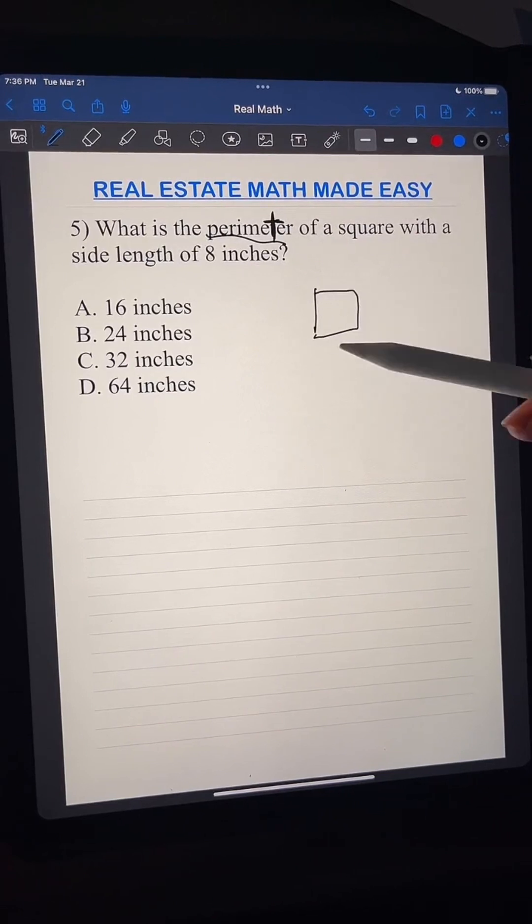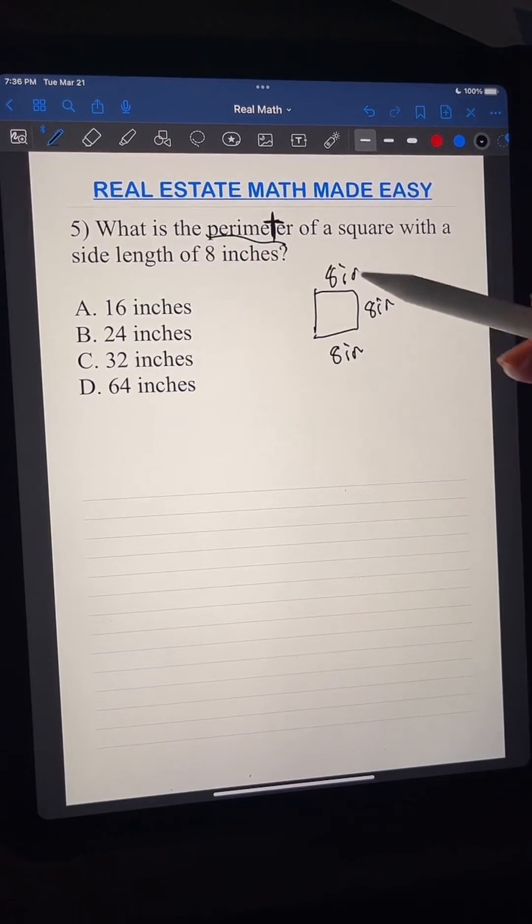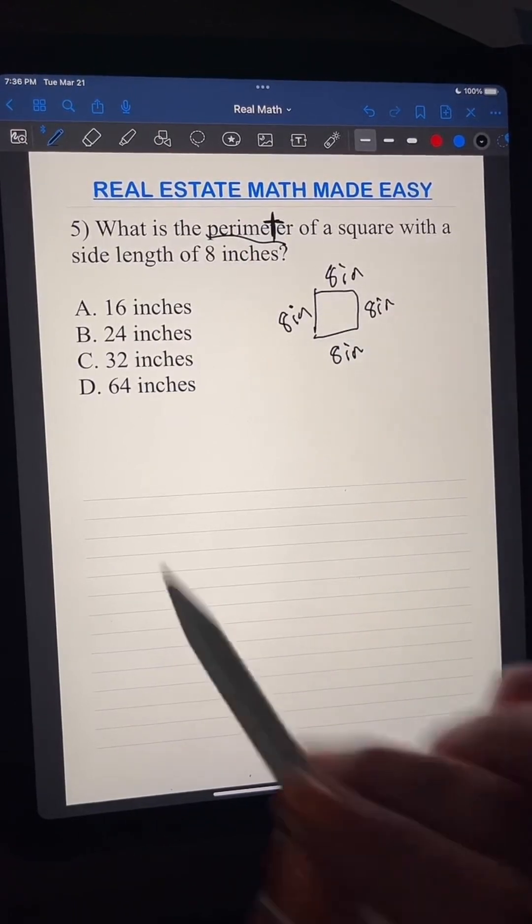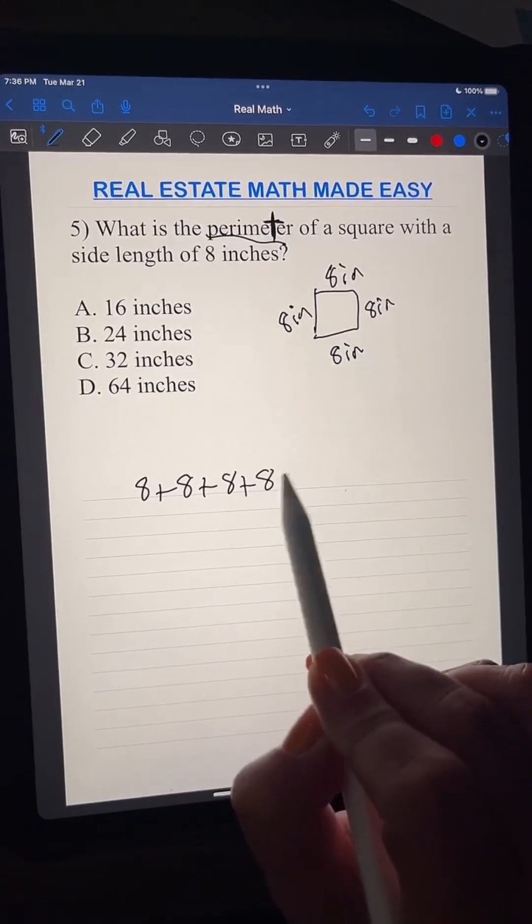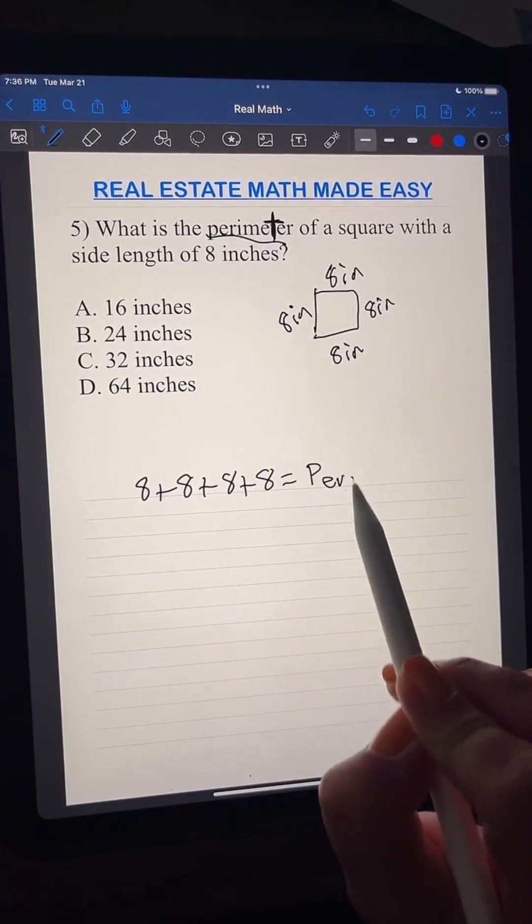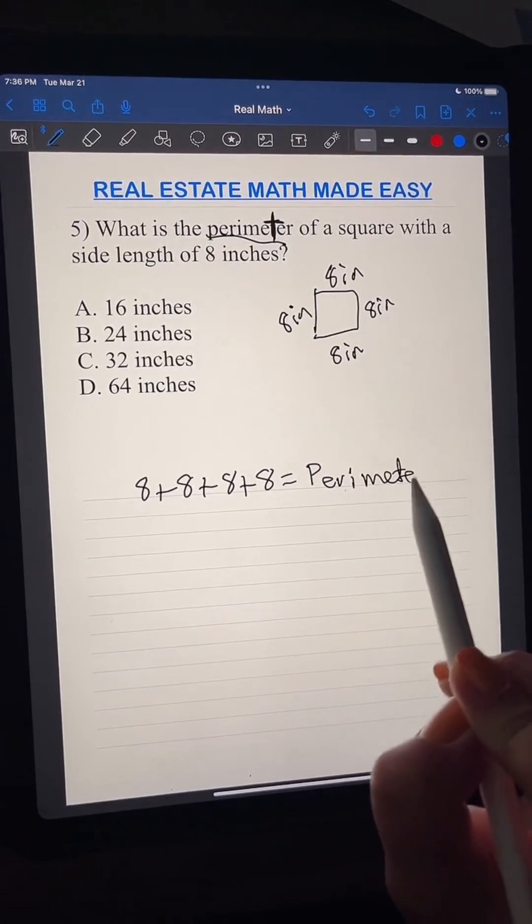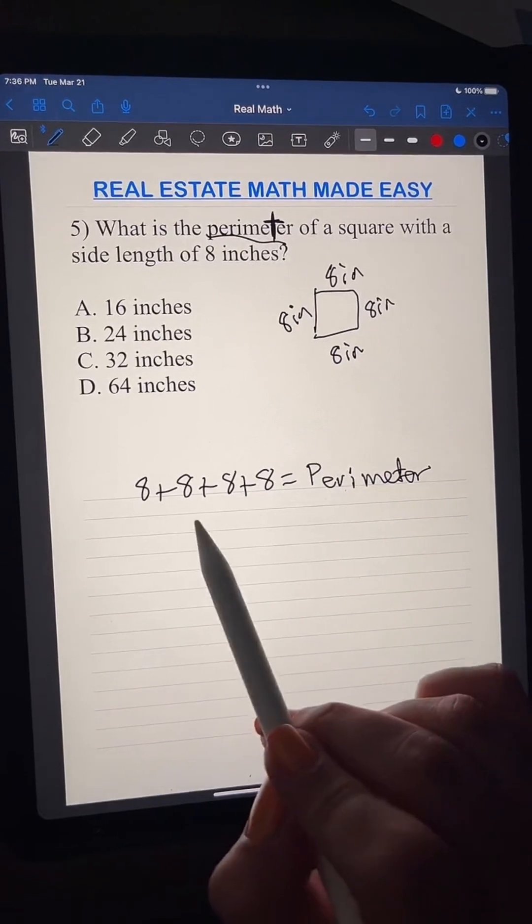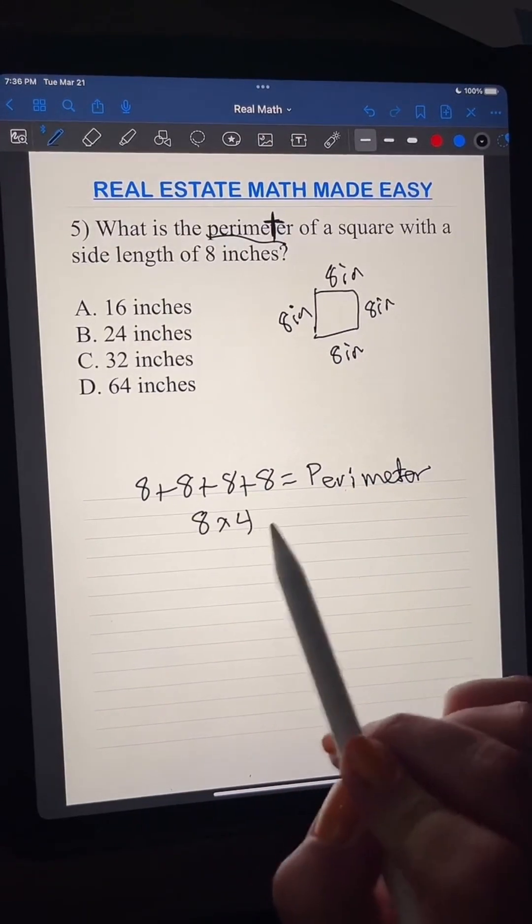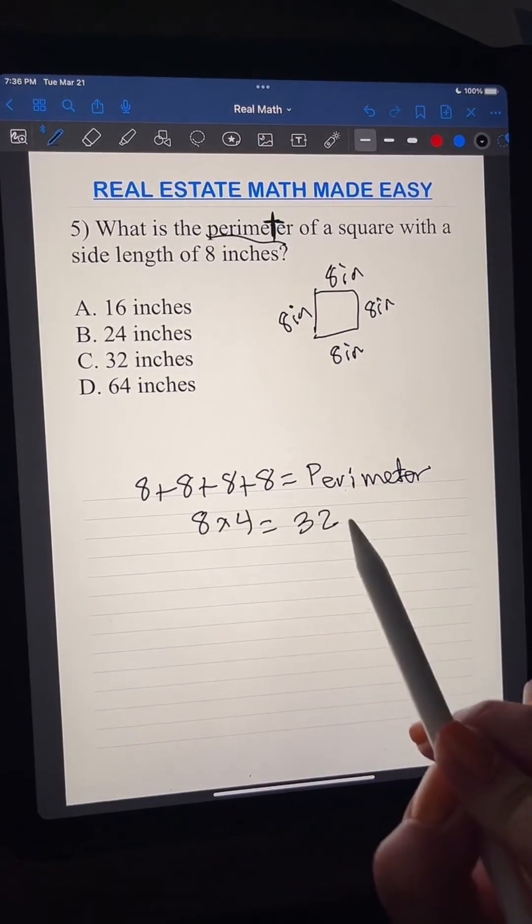So we have a square, and it has a side length of 8 inches. That means each side is 8 inches, right? So 8 plus 8 plus 8 plus 8 is going to equal our perimeter. I actually did a question just like this on my TikTok the other day. Okay, so this is basically 8 times 4, which is going to equal 32 inches.